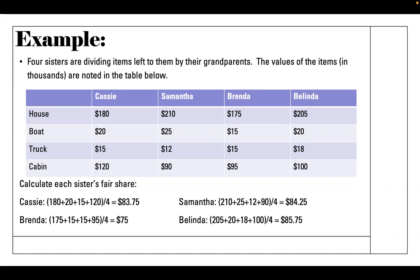So the fair shares are: Cassie thinks her fair share is $83,750; Samantha's is $84,250; Brenda's is $75,000 because she deems the items lower in value; and Belinda's is $85,750. That's what everybody believes to be their fair share based on the values they assigned.